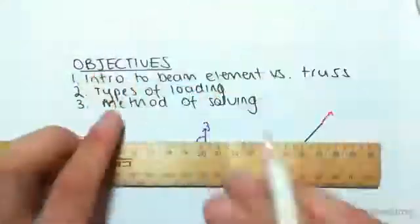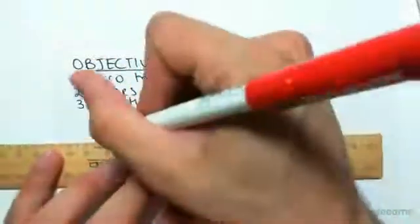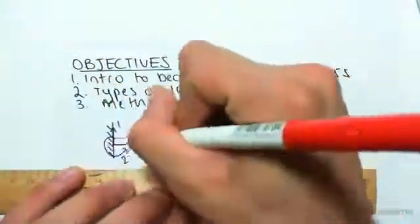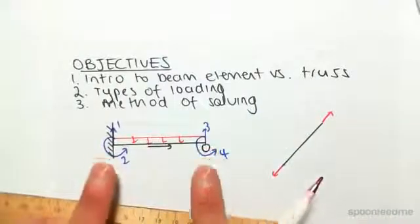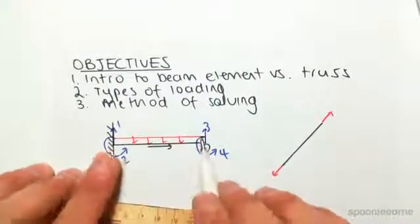So for example, we're going to be dealing with the types of loading in a second, but just for an example, we might have something like a UDL here, which would cause a shear at the supports and potentially moments.